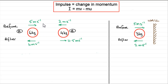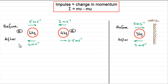In this first example we've got two particles of mass 6kg and 4kg, particles A and B, and they're moving towards one another before the impact. A is moving at 5 metres per second and B is moving towards A at 2 metres per second. Then after the impact they separate, and A moves away at 4 metres per second and B moves at 11.5 metres per second.